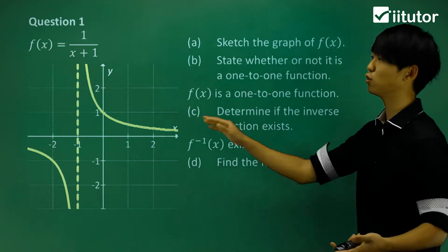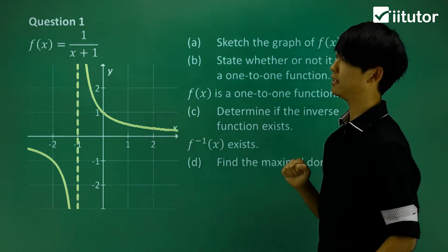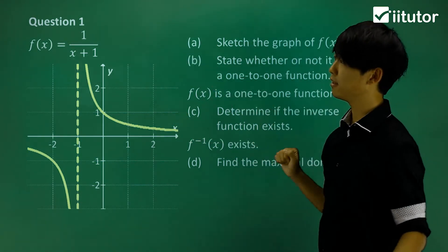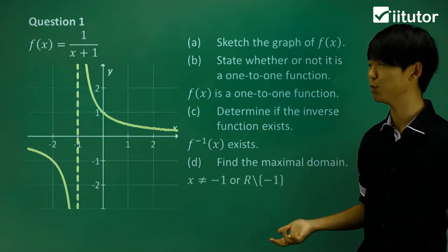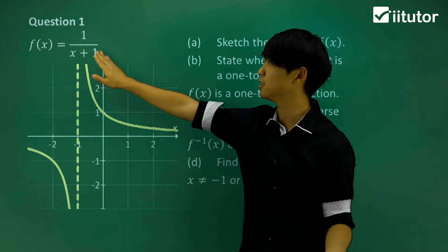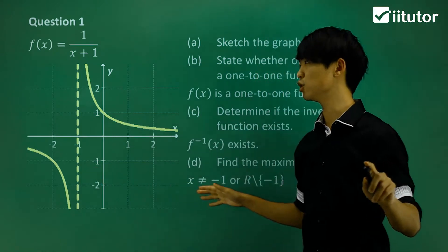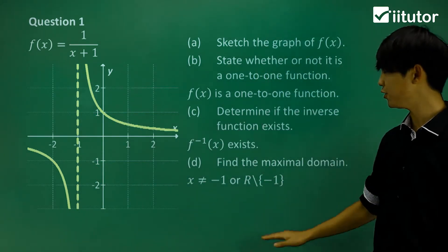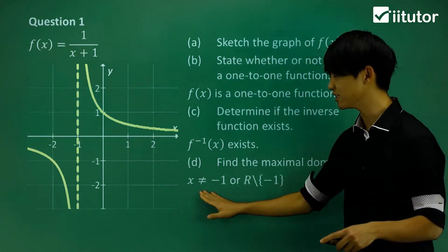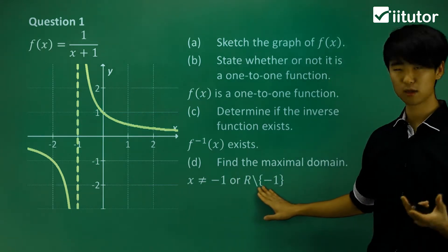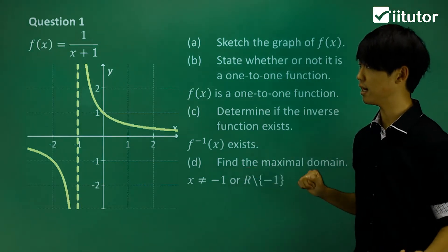Part d asks about the maximal domain — what x values can this function hold? Looking at 1/(x+1), the x value I cannot have is x = -1, simply because the denominator cannot equal 0. So every other x value is allowed, but x = -1 is not possible. Depending on your textbook or school, use the appropriate notation — interval or set notation — to answer these questions.